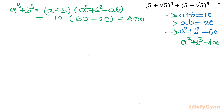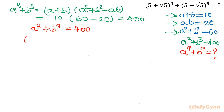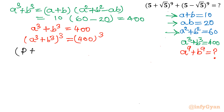Our target is A⁹+B⁹. Rather than going through A⁵+B⁵ and A⁷+B⁷, I will cube both sides of equation 4: (A³+B³)³ = 400³. I will expand the left side using the identity (P+Q)³ = P³+Q³+3PQ(P+Q).